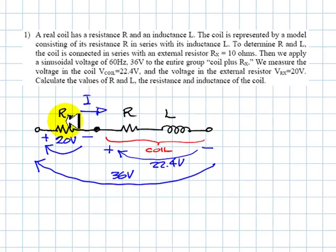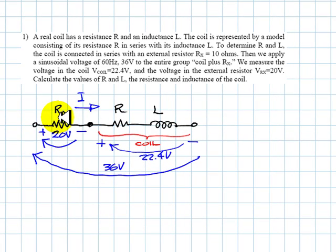Well, the voltage in Rx is going to have the same phase, zero. That's going to be our current. The voltage drop in this resistor is going to be in phase with the current. So this is the voltage in this resistor, the voltage in Rx. I'm going to write there 20 volts.